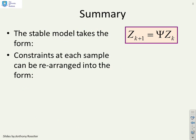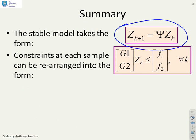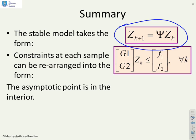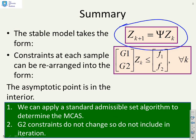So a summary. We've got a stable autonomous model for predictions, ZK plus 1 equals psi ZK. We've got constraints which are split into two components, one which must be satisfied for all K and one which must be satisfied just at K equals 0. The asymptotic point is in the interior, so we can now use a pretty standard admissible set algorithm to determine the MCAS for this system. And we've reminded you that G2 constraints do not change, so we do not include them in the iteration within the admissible set algorithm.